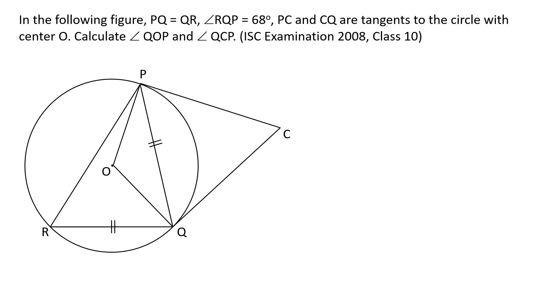It is given that angle RQP is 68 degrees and QR is equal to QP. So triangle PRQ is an isosceles triangle, and in an isosceles triangle, opposite angles are equal, say x. The sum of all three angles in a triangle is 180 degrees. By that we can find out the unknown angle x, that is 56 degrees.